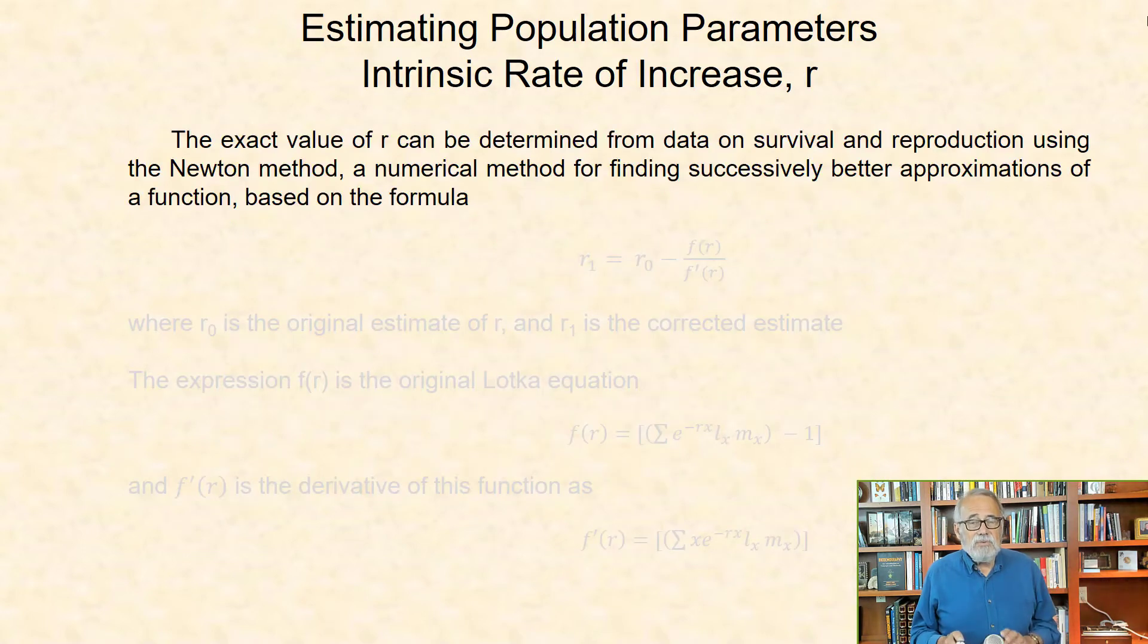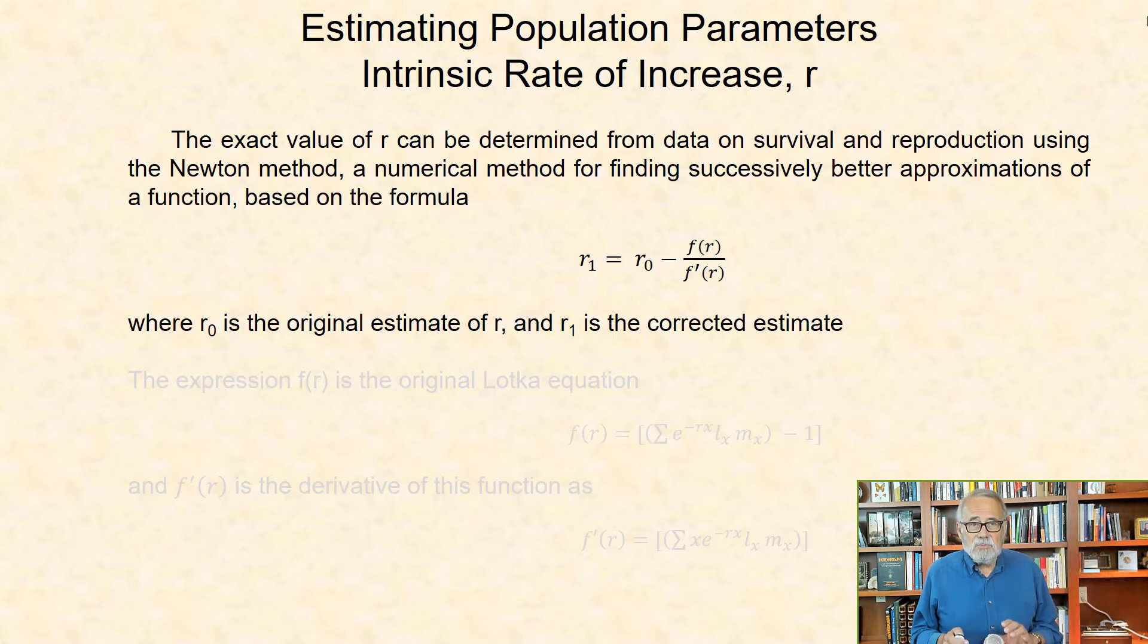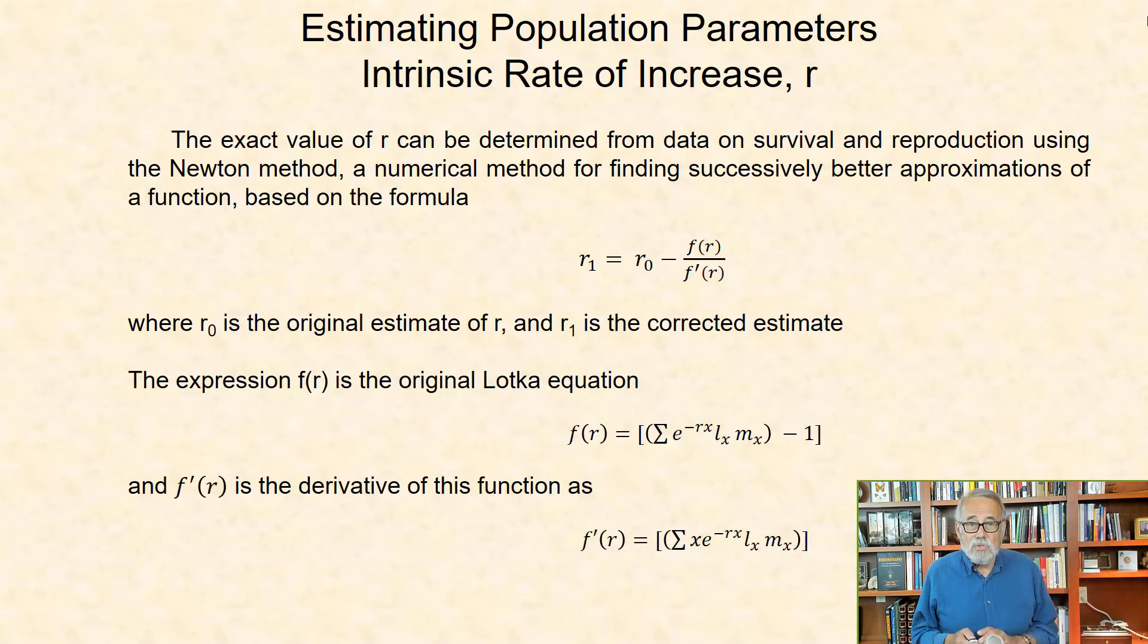The exact value of r, the intrinsic rate, can be determined from data on survival and reproduction using Newton's method, a numerical method for finding successively better approximations of a function based on the formula r1, that is, the first iteration estimate, equals the initial guess r0, minus the dividend of the Lotka equation and its derivative. The expression f(r) is the original Lotka equation, shown here, and f'(r) is its derivative, shown here.